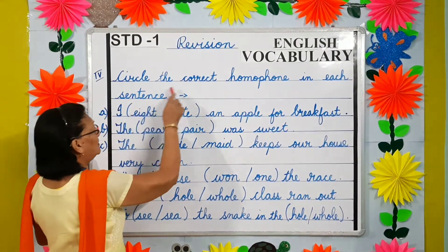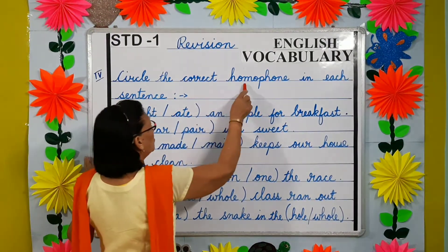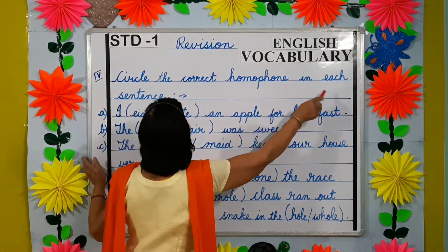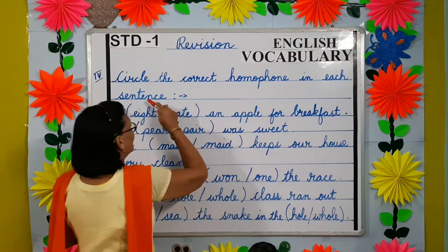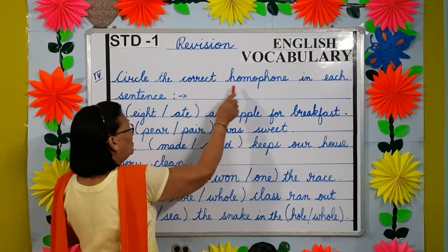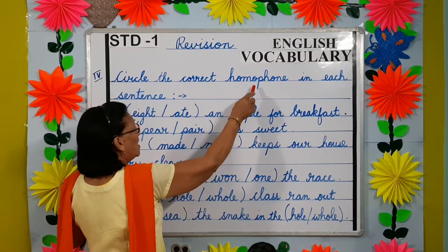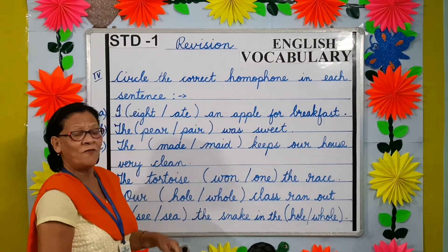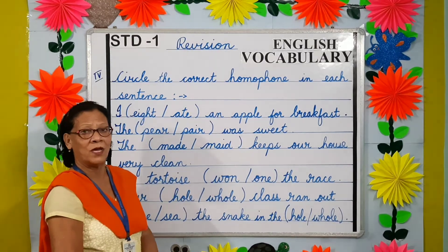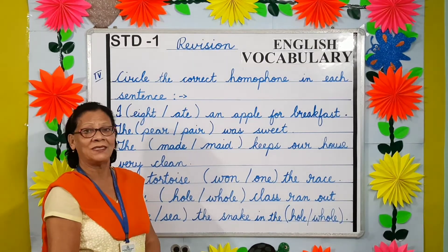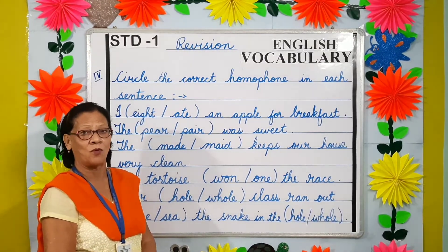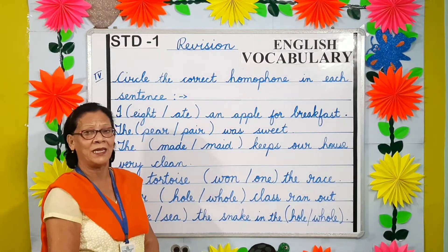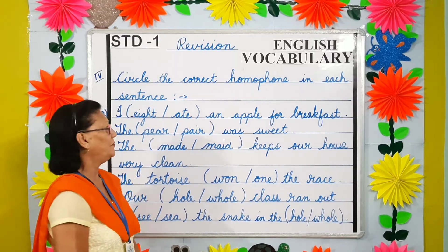Question number 4: circle the correct homophone in each sentence. Children, what are homophones? Homophones are words with the same sound but different meaning and different spelling.